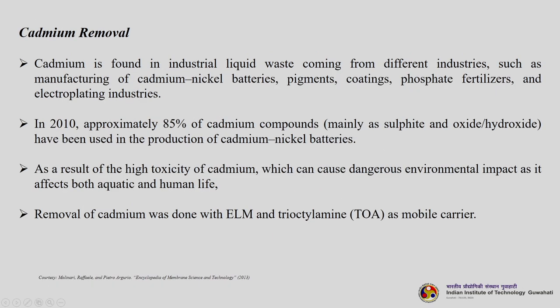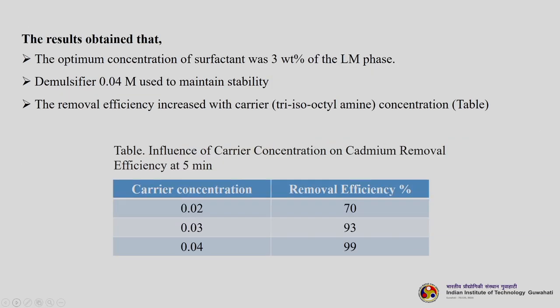Cadmium is found in industrial liquids from manufacturing of cadmium-nickel batteries, pigments, coatings, phosphate fertilizers, and electroplating industries. In 2010 approximately 85% of cadmium compounds — mainly sulfide, oxide, and hydroxide — were used in production of cadmium-nickel batteries. Due to high toxicity of cadmium, affecting both aquatic and human life, cadmium removal using ELM was studied with tri-octyl amine (TOA) as the mobile carrier. The optimum surfactant concentration was 3%, and 0.04 molar de-emulsifier was used to maintain stability. Removal efficiency increased with carrier concentration — increasing carrier from 0.02 to 0.04 molar increased removal efficiency from 70% to 99%.